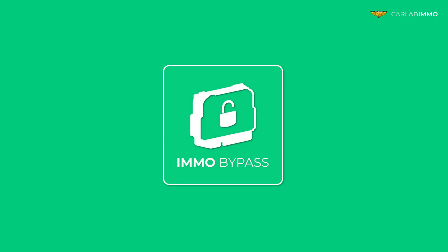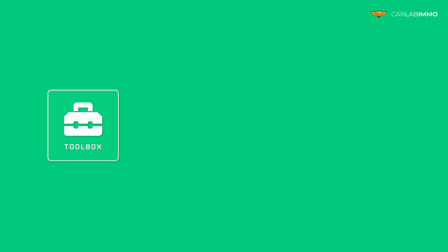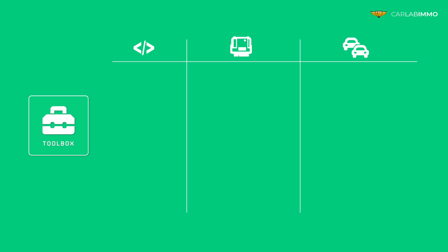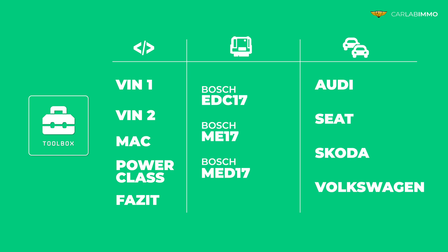Now you can easily do it for free in IMMO Bypass thanks to a new function called the Toolbox. Toolbox lets you calculate VIN 1, VIN 2, MAC, power class, and facet values required for authorizing, coding, or flashing the following Bosch ECUs that are commonly installed in VAG group vehicles.